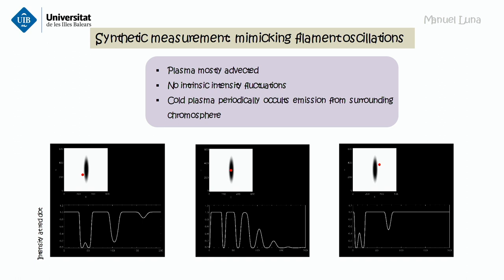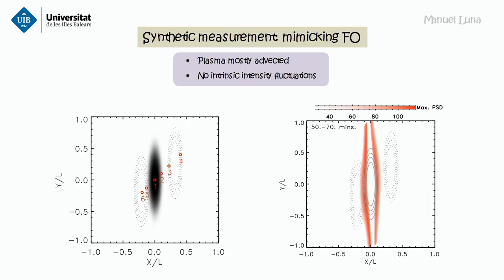There is a complication: at the center of the filament the period appears as half the true period, because the filament crosses that point twice during one cycle. But we found a very good result. If this is the motion of the cool plasma, between the extremes of the motion, and we apply the fast Fourier transform for every single pixel and compute the power spectral density, there is a strong emission around the filament with the same period as the oscillation. This is what we found in this mimicking of the oscillation.